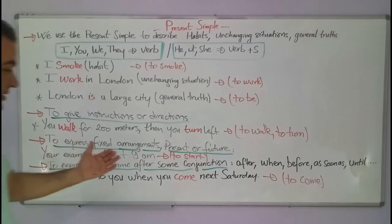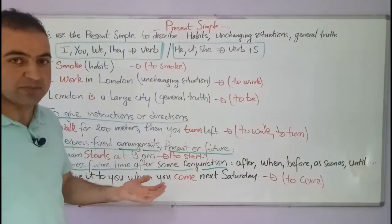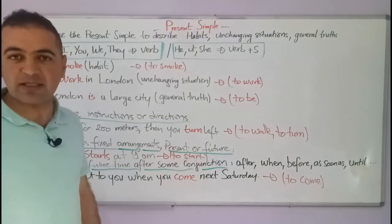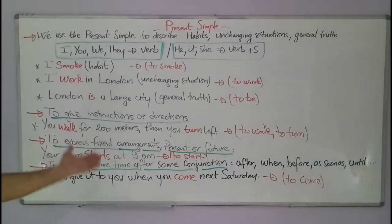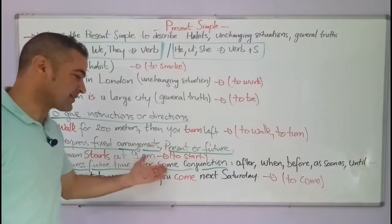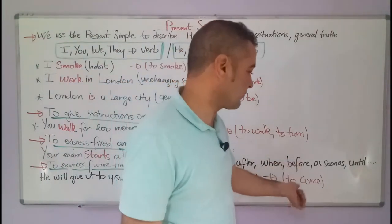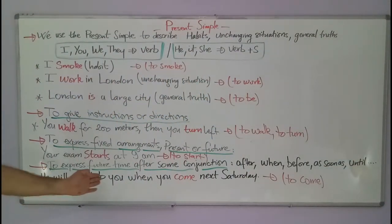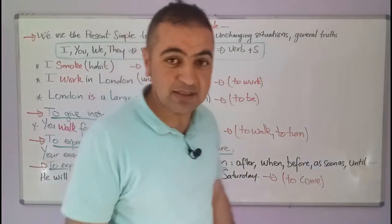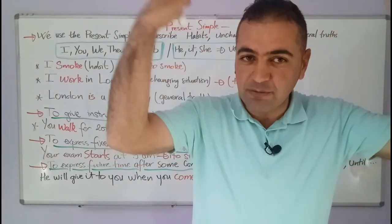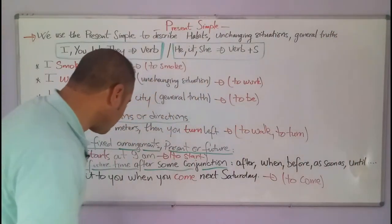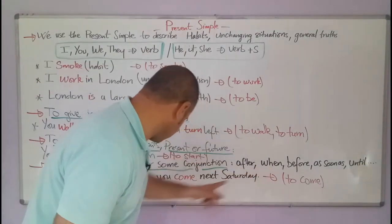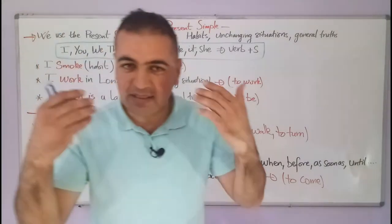We also use the present simple to express fixed arrangements in the present or the future, for example appointments: your exam starts at 9 am. And to express future time after some conjunctions like after, when, before, as soon as, until, etc. For example: he will give it to you when you come next Saturday. This action will happen in the future, but after the conjunction we use the present simple, not the future.